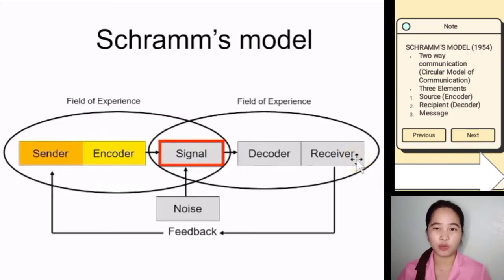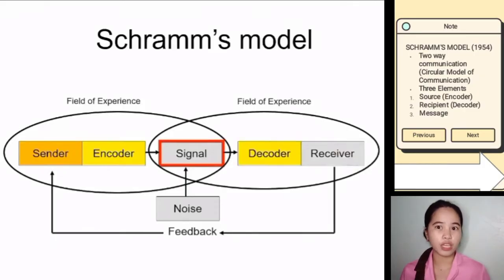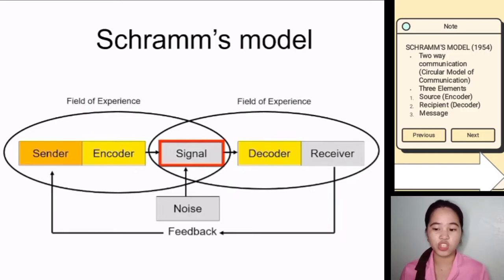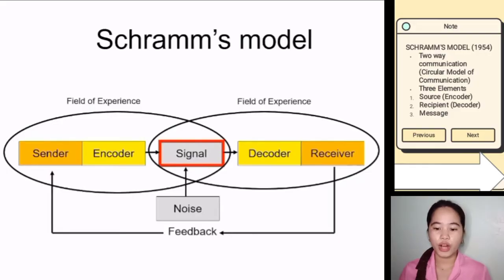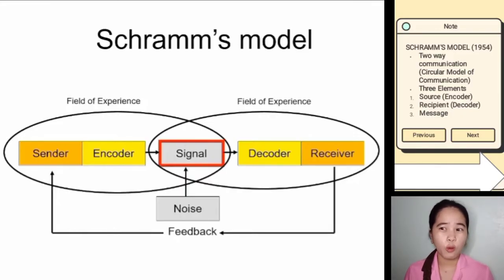The signal is going to be received by the receiver or the recipient — that's the second element in Schramm's model, and that's you. But in order to receive it, you have to decode it, which means you have to be able to understand the written and spoken English and understand the visuals represented to you. This is the message, which is the third element in Schramm's model.